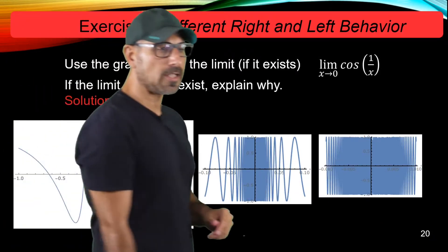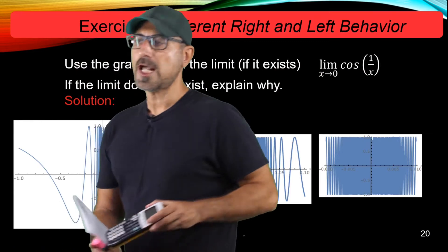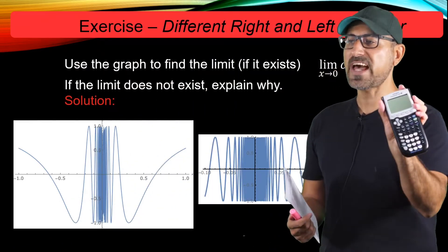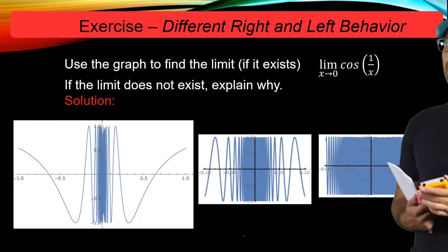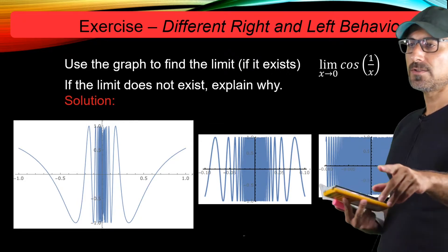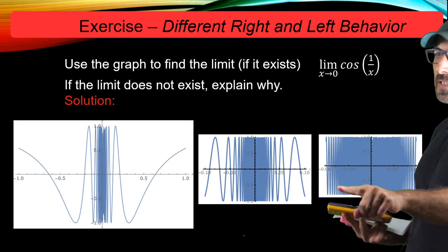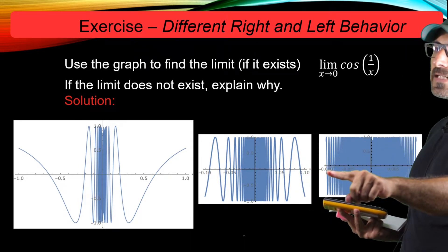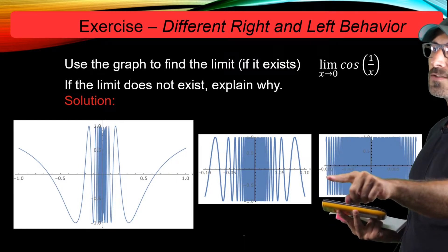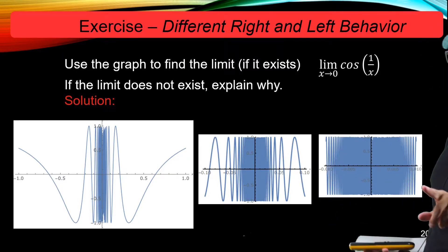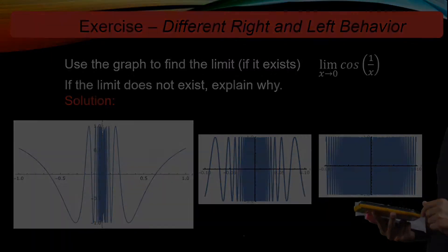So in your calculator, you can perfectly change the x min, x max values for the graph of cosine 1 over x to get these graphs. Like for example, here in the last one, the x min is negative 0.001, and x max is 0.001.